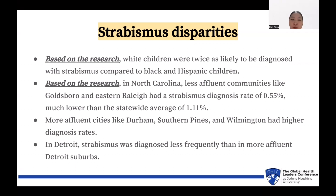In North Carolina, less affluent communities had a Strabismus diagnosis rate of 0.55%, much lower than the statewide average of 1.11%. More affluent cities like Durham had higher diagnosis rates.